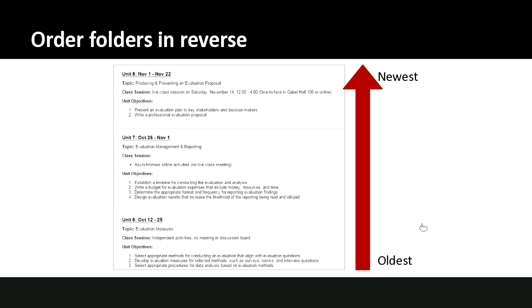Another strategy: order your folders in reverse. Have the oldest content down at the bottom and the newest up at the top, so students see the most current content at the top of the page. It helps them and it helps you — you're not doing a lot of scrolling to find the newest content. It's a really easy one to do. You can build out the structure in chronological order and then just drag those folders into reverse order.